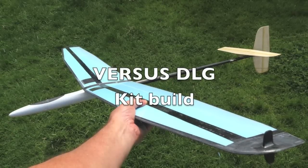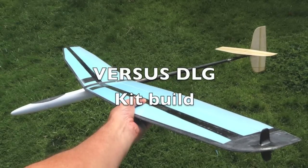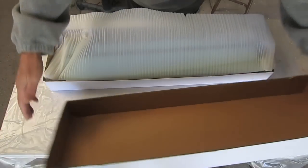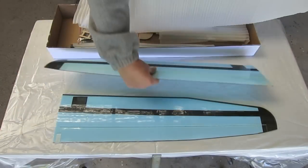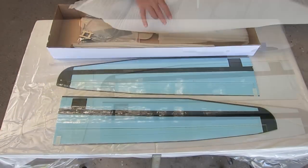This is my build video for the Versus Discus Launch Glider from Hobbyking. This is what we get in the kit.